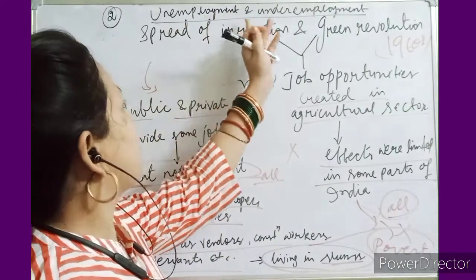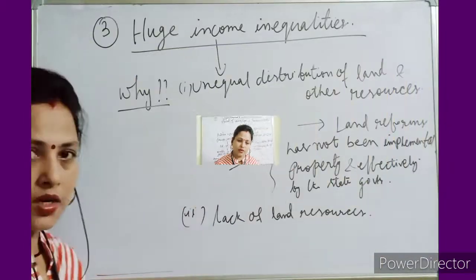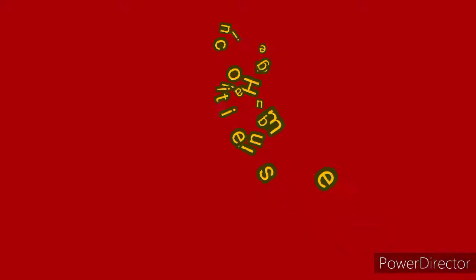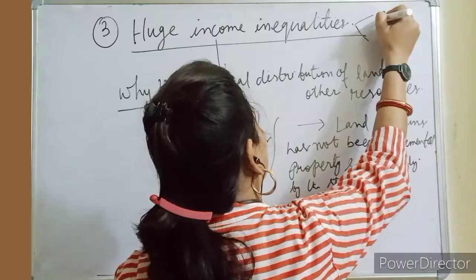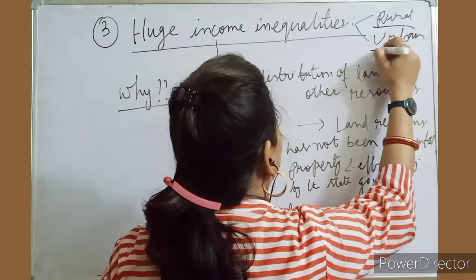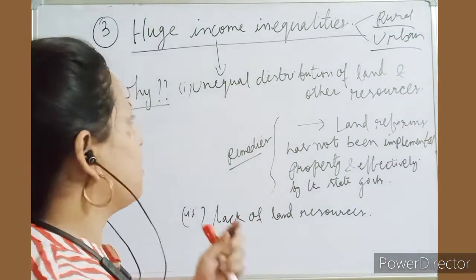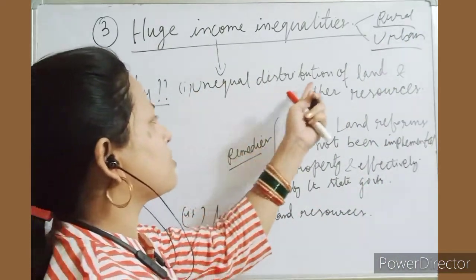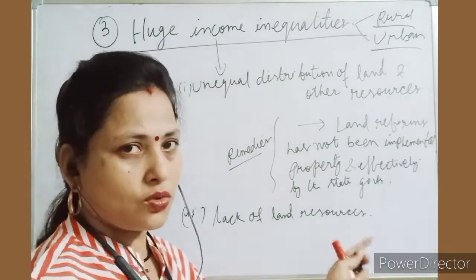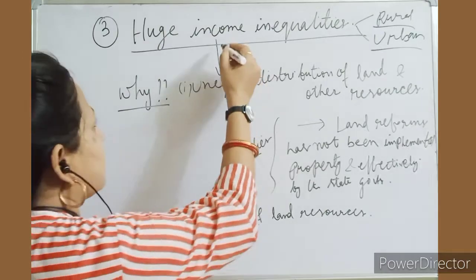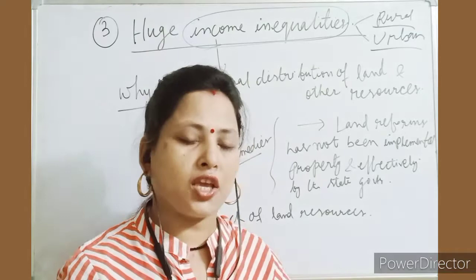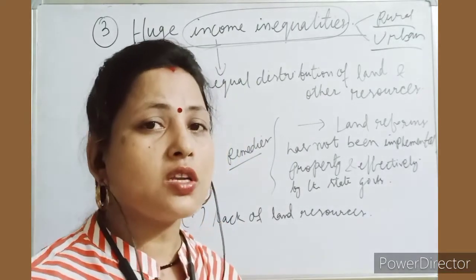The second reason is unemployment and underemployment. The third reason is huge income inequalities, which we find both in rural and urban areas. In rural areas, there are two reasons: unequal distribution of land and other resources, and lack of land resources. Due to these two reasons, income is also unequal.